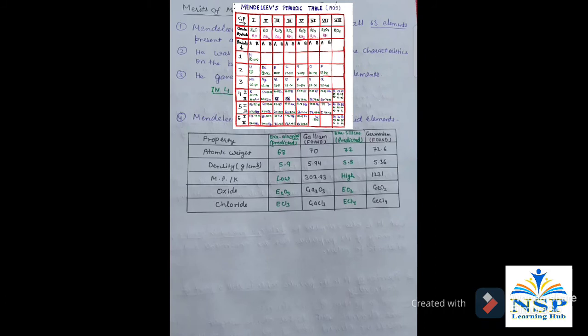So, we know that Mendeleev's gaps for undiscovered elements are true, and gallium and germanium are found for that place, and his predictions are also very close to these elements.